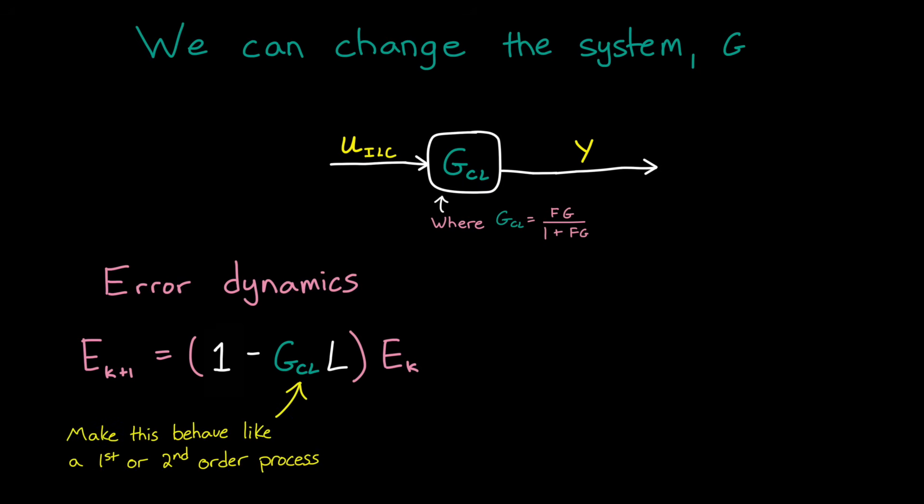But we can make the closed loop system behave like a first or second order process. And if we do that, then we can get away with a model free proportional derivative learning function. And this is why you will often implement ILC alongside a feedback controller. So you have the ultimate flexibility in ensuring that the learning process converges.